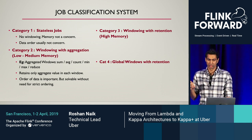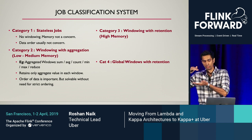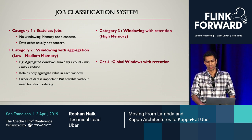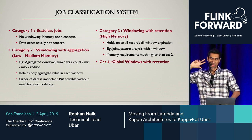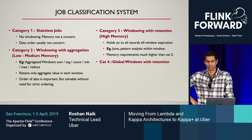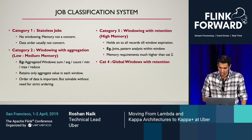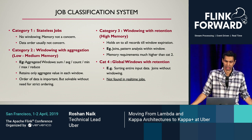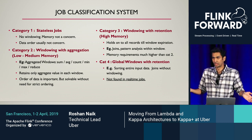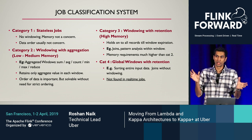Category three is windowing with retention — instead of incremental aggregates, you're retaining all the data in memory in the window. Typical use cases are joins or pattern assessment when the window closes. Memory requirements are obviously much higher compared to category two. Category four is holding everything in windows in memory — things like sorting entire input data or joins without windowing — these never occur in real time, so we don't need to support them.